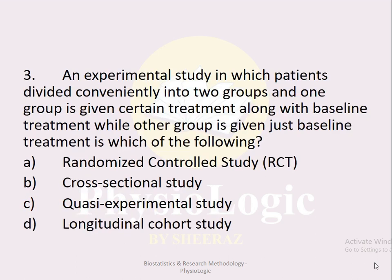MCQ number three: An experimental study in which patients are divided conveniently into two groups — one group given a certain treatment along with baseline treatment while the other is given just baseline treatment — is which of the following? Option a randomized control trial, option b cross-sectional study, option c quasi-experimental study, option d longitudinal cohort study. The correct option is option c, quasi-experimental study.